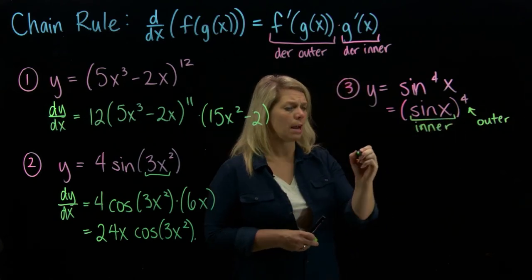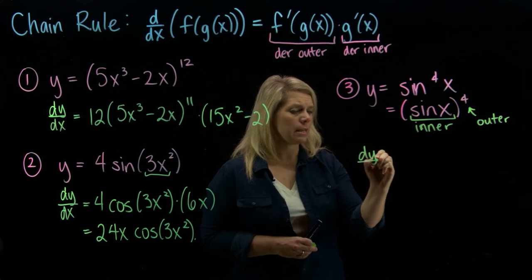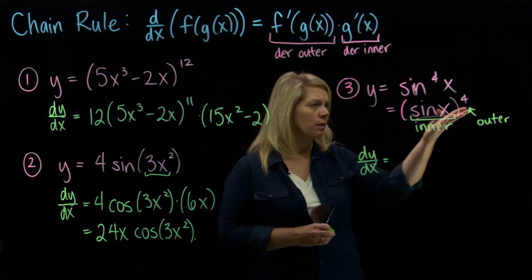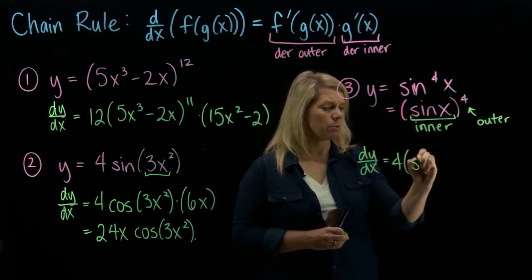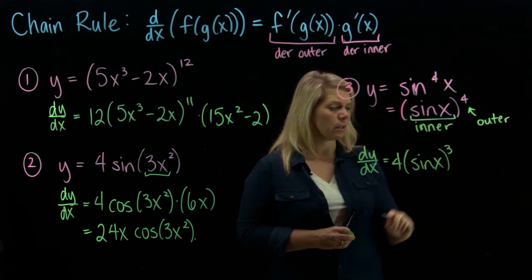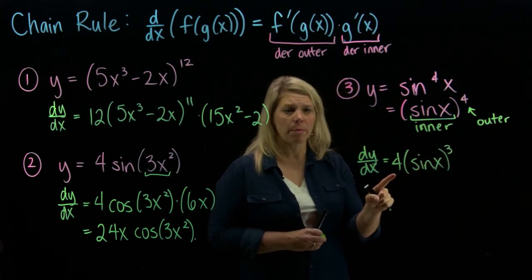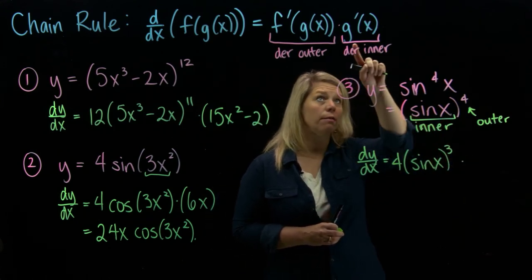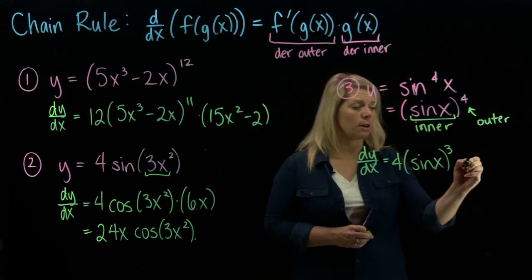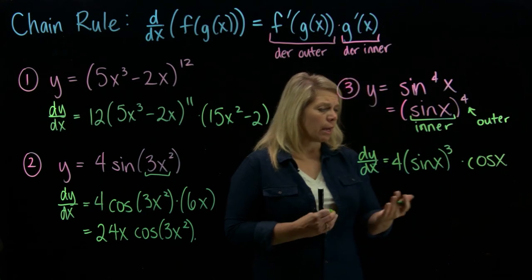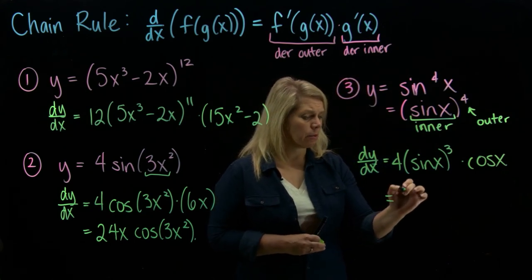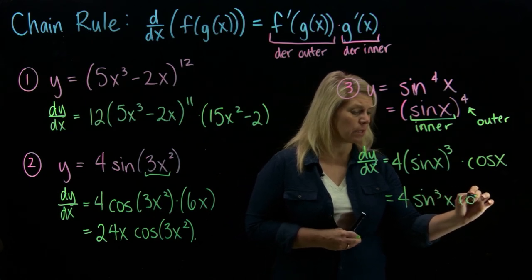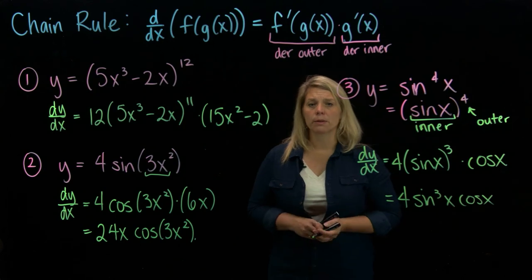We're going to go ahead and do the derivative now. dy/dx equals — take the derivative of the outer function, leaving the inside alone: bring down that exponent and subtract 1, leaving the inner function alone. Then times the derivative of what's inside — the derivative of the sine function is cosine. We can rewrite that as 4 times sine cubed of x times cosine of x. We'll look at some more examples in the next video.